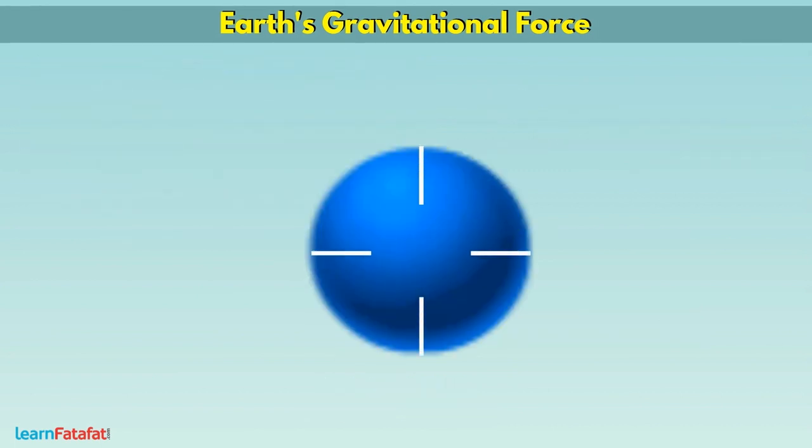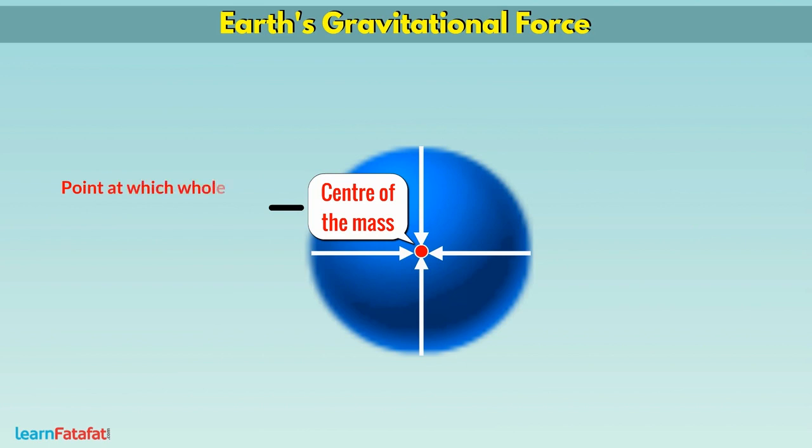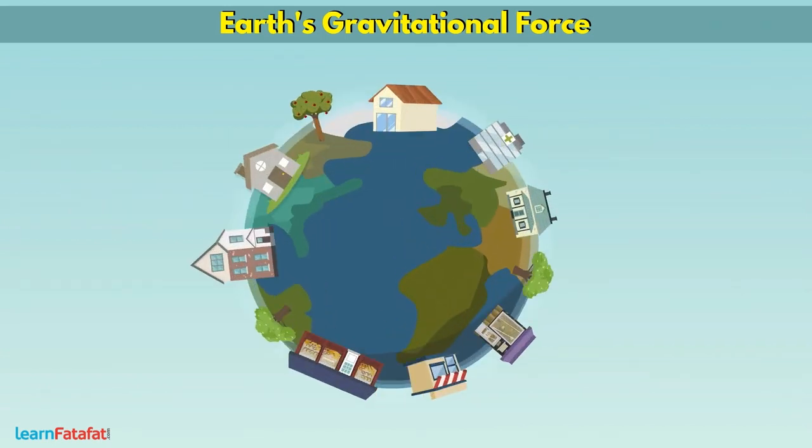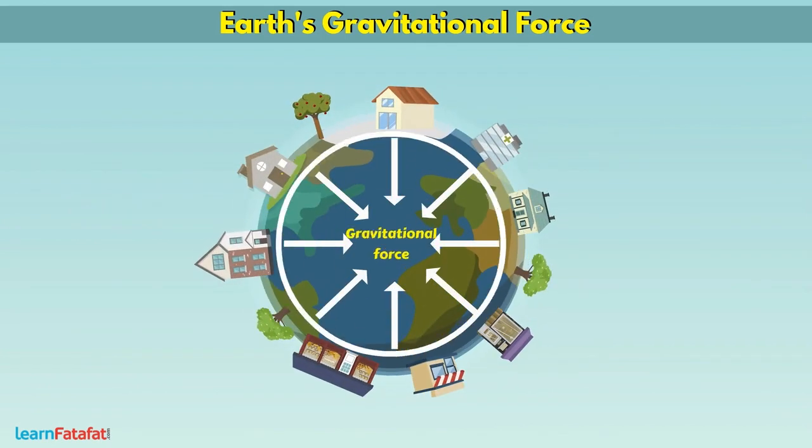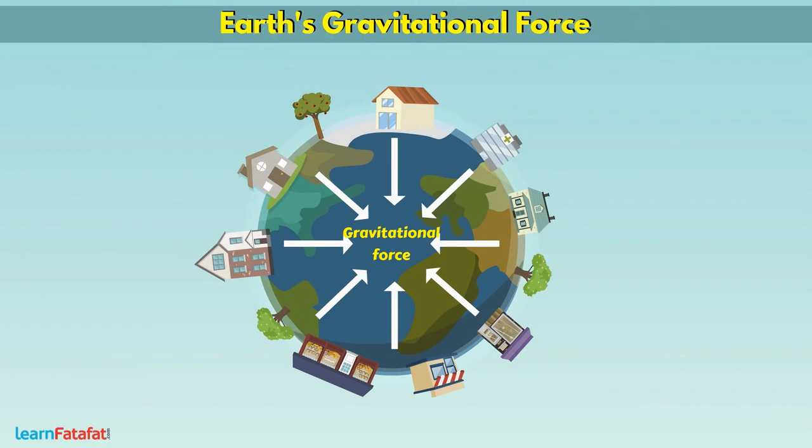The direction of this force is towards the center of mass of the object. The center of mass of the object is the point at which the whole mass of the body is said to be concentrated. Earth also attracts objects with a gravitational force. We call it Earth's gravitational force.